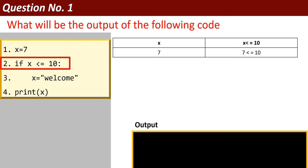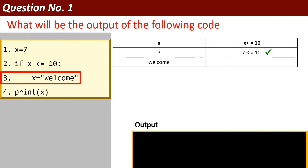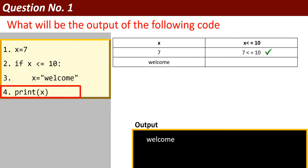Next, I have applied an if statement. If x is less than or equal to 10, it will check whether this condition is true. In this case, x means 7. 7 is less than or equal to 10 — that is true. If it is true, the statement following the if will be executed. So x will get the value 'welcome', and print x will print 'welcome' on the output screen. This is program number 1.